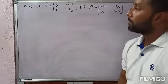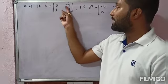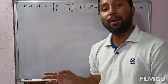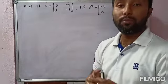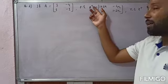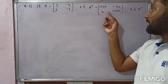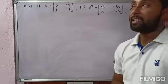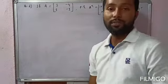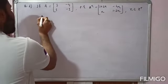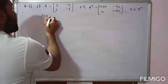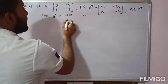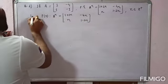Take one more example. If A equals the matrix [3, −4; 1, −1], prove that A to the power n equals [1+2n, −4n; n, 1−2n], where n belongs to positive integers (Z+). Step 1: let P(n) be such that A to the power n equals [1+2n, −4n; n, 1−2n]. This is P(n).